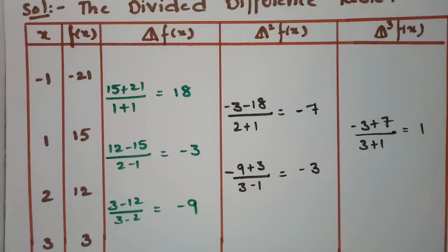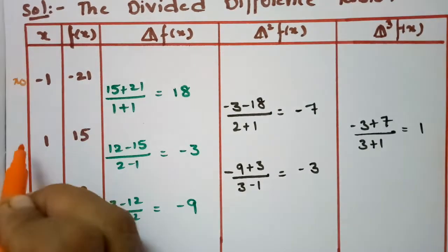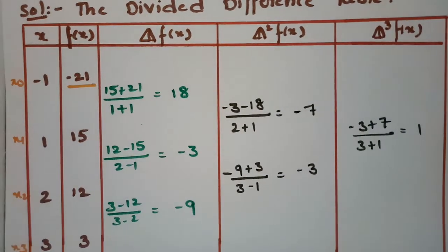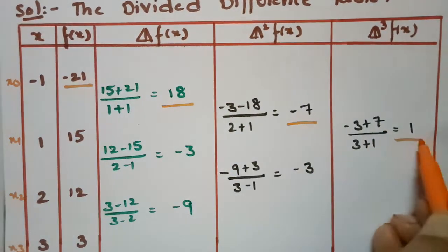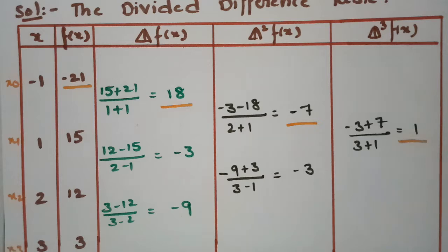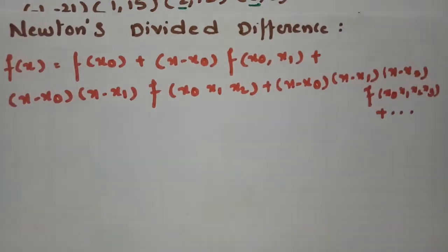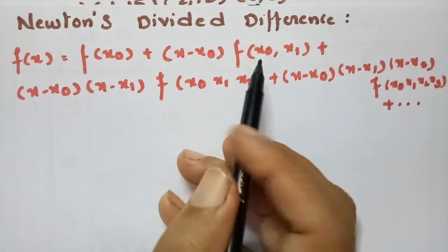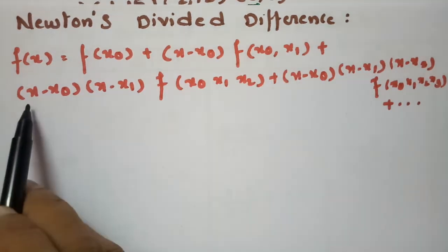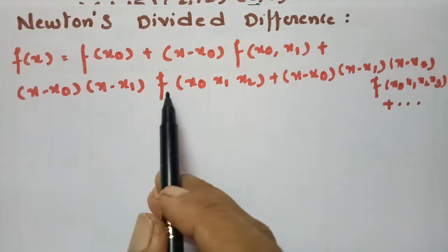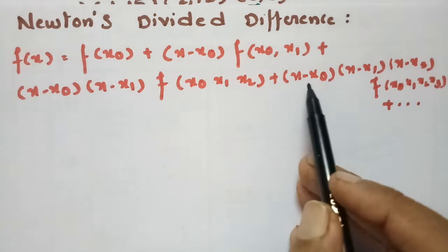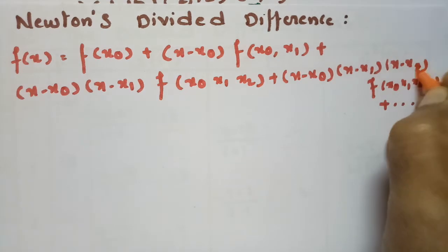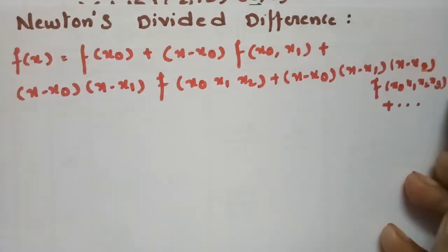We identify x₀ = -1, x₁ = 1, x₂ = 2, x₃ = 3, and f(x₀) = -21. These values are required for substitution in the Newton divided difference formula: f(x) = f(x₀) + (x - x₀)·f[x₀,x₁] + (x - x₀)(x - x₁)·f[x₀,x₁,x₂] + (x - x₀)(x - x₁)(x - x₂)·f[x₀,x₁,x₂,x₃] + ...